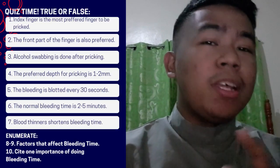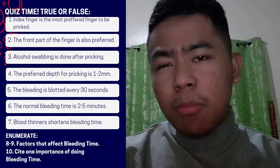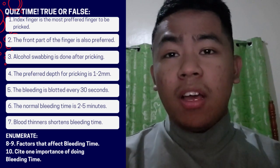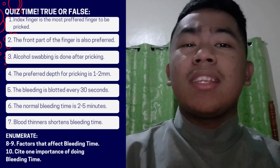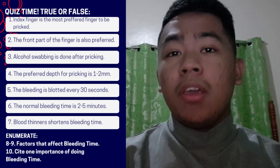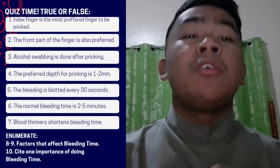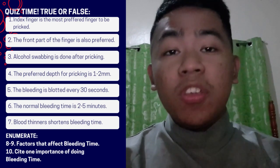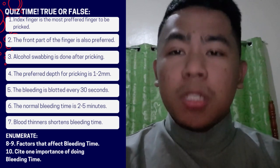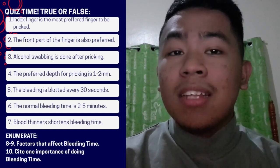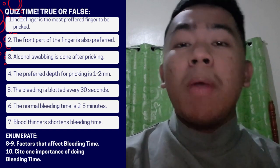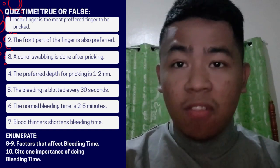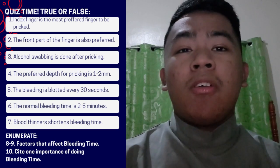Great job everyone on the bleeding time test demonstration. I noticed that most of you were able to properly sterilize the puncture area and follow the correct procedure. However, a few of you seemed to struggle with keeping the wound site clean and free from contaminants. Remember, it's important to maintain sterile conditions and ensure prevention of infection during this procedure to ensure accurate results. I also noticed that a few of you had trouble accurately timing the bleeding — make sure to pay attention to the stopwatch and record the exact time to the nearest 30-second interval. Also remember to blot the bleeding after the first 30-second interval of bleeding, not the first instance of bleeding. Overall, I'm proud of the progress you've made.